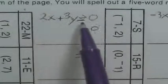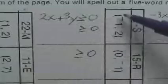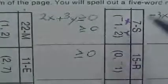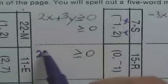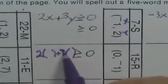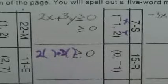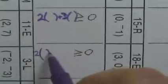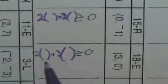Now it says 2x plus 3y is greater than or equal to zero. There's a point right here — I need to plug in this x and this y and see if it's true. I'm going to put down the expression 2 times parentheses plus 3 times parentheses and continue that all the way down the column. You can do a lot of this in your head, but I need to show you what I'm calculating.